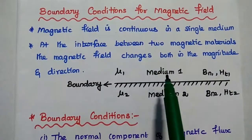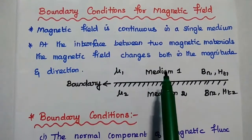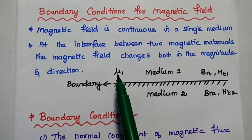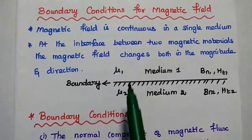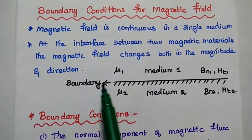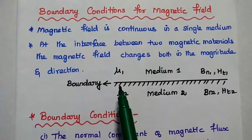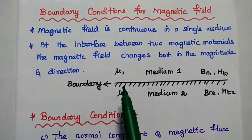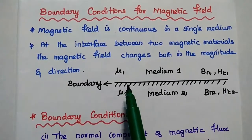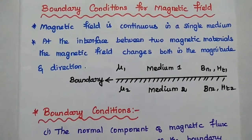Consider two magnetic media with different permeabilities mu1 and mu2. This is the boundary line. We can obtain boundary relations for this magnetic field.